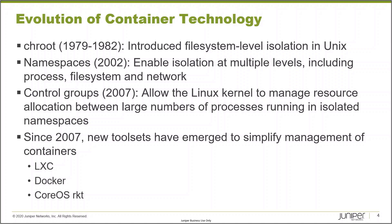Then, about 20 years later, we saw the development of namespaces in the Linux kernel, introduced in 2002. These expanded isolation to work at multiple levels — isolated process spaces, file system spaces, and network spaces. If you're coming from the network world, Linux network namespaces are very similar to VRFs or RIBs. In 2007, a couple of engineers at Google developed control groups. Control groups, in combination with namespaces, are really what make modern containers possible. They allow the Linux kernel — without any additional hypervisor — to manage resource allocations between large numbers of processes, each running in their own isolated namespaces, giving us OS-level virtualization capability with a lot less overhead.